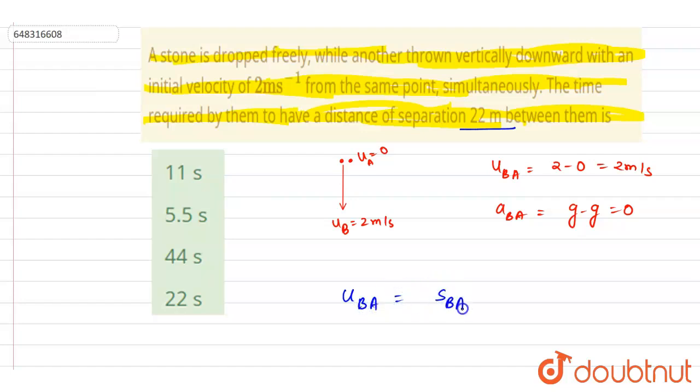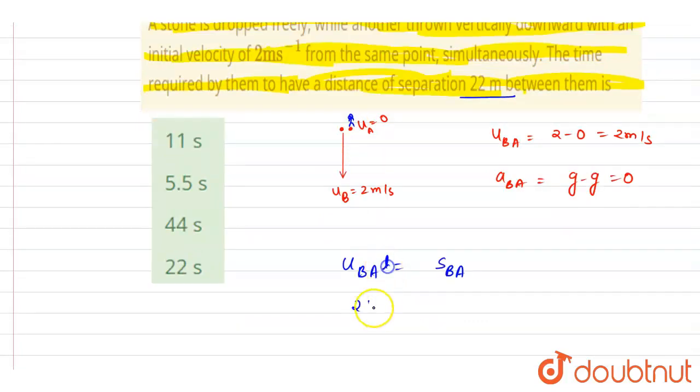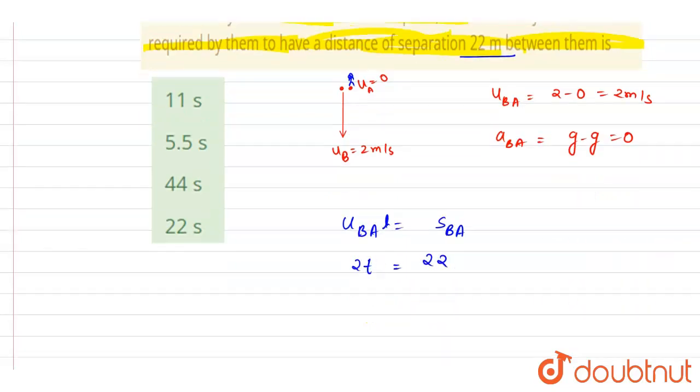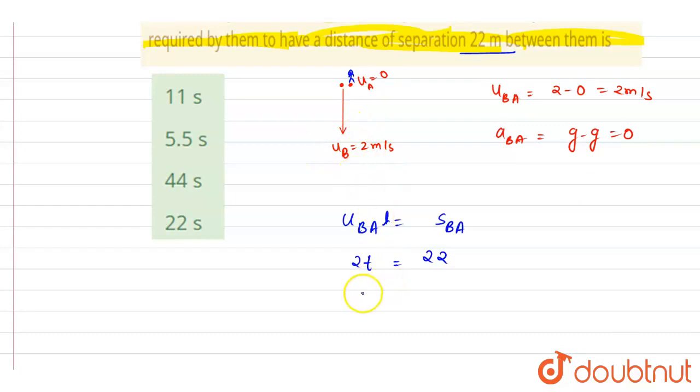it equals to - the separation, that is the distance of B with respect to A, is uBA into t. The distance is the separation between the two, that is distance of B with respect to A, which is 22.